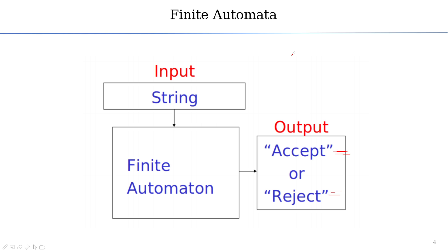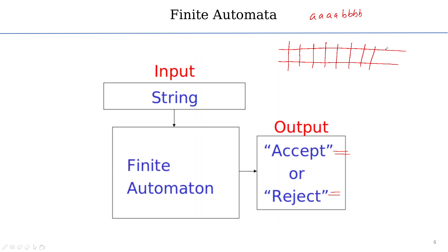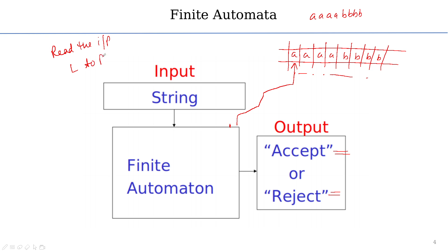The input is a string — for example, A, A, A and B, B, B. This is a finite input block. One symbol at a time is placed in one block. The finite control reads from this input one by one, moving left to right. This movement is called reading the input left to right.